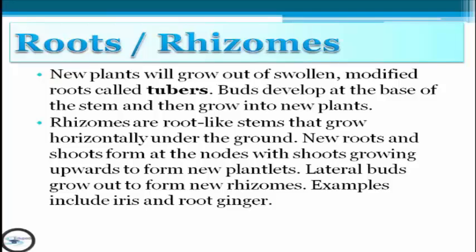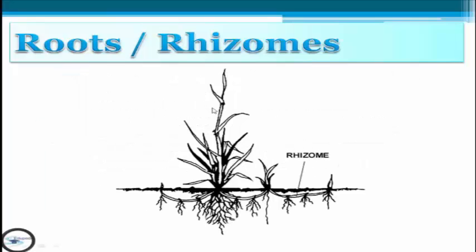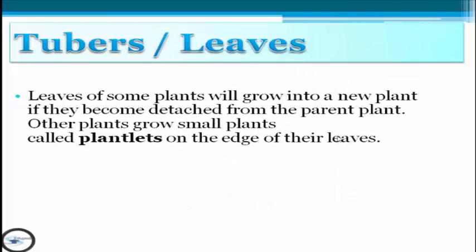Samples include iris and root ginger. As you can see in the picture, this is what we call rhizomes. On the root, it gives several stems and roots that can produce the same as the mother plant.